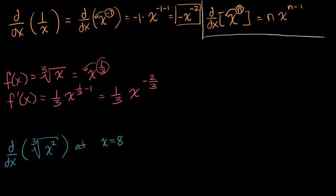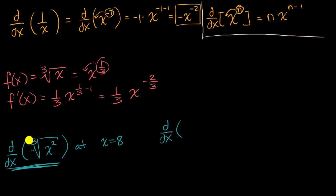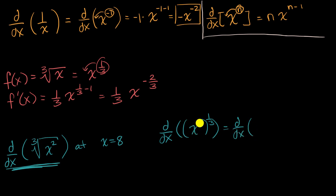Pause this video and see if you can figure that out. What we're going to do is first figure out what the derivative is, and then evaluate it at x equals eight. The key thing is: the cube root of x squared is the same as x squared to the 1/3 power. Raising something to an exponent and then raising that to another exponent, we can take the product of the exponents — so this is x to the two times 1/3, or x to the 2/3 power.